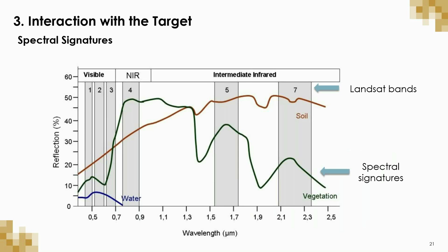These graphs that have appeared on the last few slides are called spectral signatures. These show how an object interacts with light of different wavelengths. If the object reflects a large portion of a certain wavelength, a spike will appear on the graph. This is useful because these known spectral signatures can be compared to the signatures measured in collected images to determine the type of object that light is interacting with. This figure shows some well-established spectral signatures compared on the same graph to show how different objects interact with light differently.